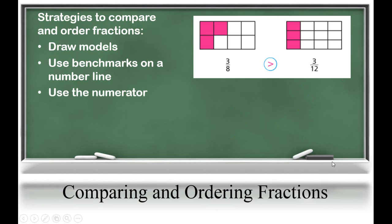Another strategy is to use a common numerator. When both numerators are the same, that means we have the same number of pieces, so we have to think about which pieces are larger. If we cut one whole into eighths, the eighths would be larger than if we cut one whole into twelfths. So if I had three-eighths, that would be larger or greater than three-twelfths.